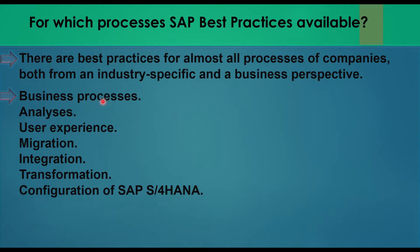It is a very wide topic, but I will focus on business processes — how a consultant or any user wanting to learn or explore best practices can find the appropriate way to perform a particular process. For example, if we consider scheduling agreement from MM: we know we create scheduling agreement, create scheduling lines from ME38, then do goods receipt — but that is not the only standard way. In scheduling agreement, we can also use MRP. All such possibilities are available in SAP best practices.